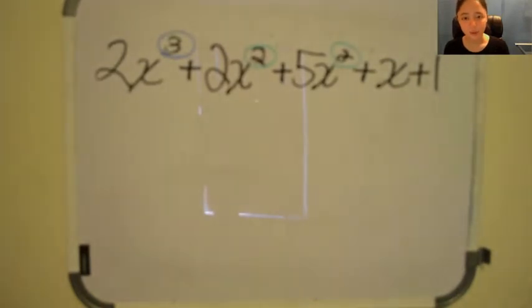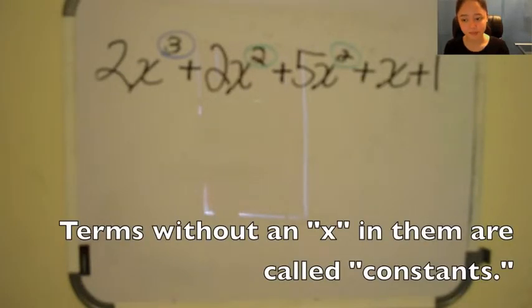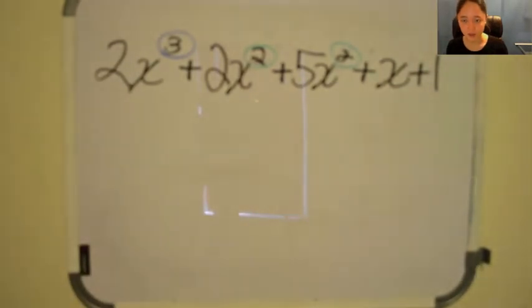Now look at the 1. You can add numbers without x together, like regular addition. Therefore, one can't be added to anything else in this equation.